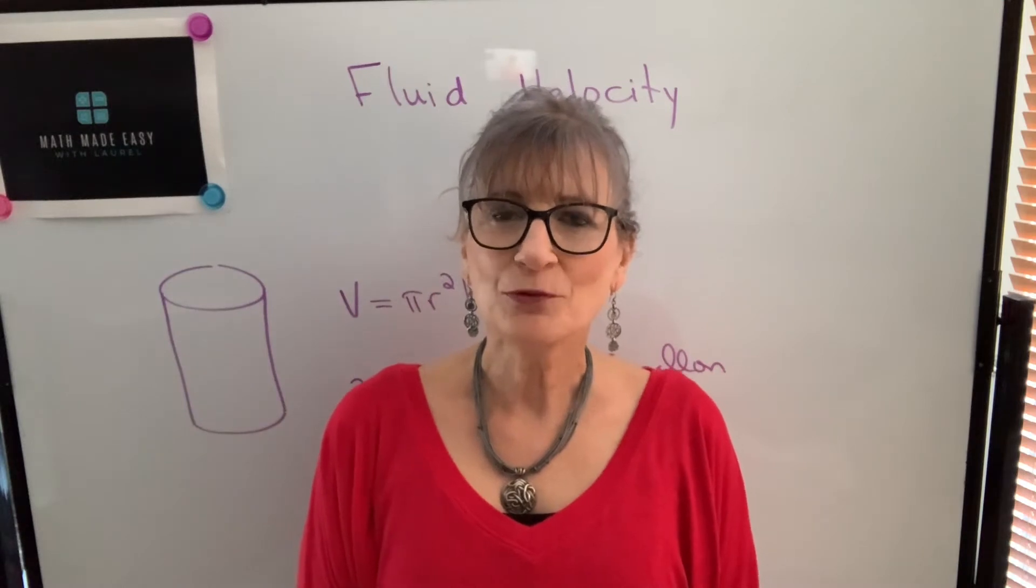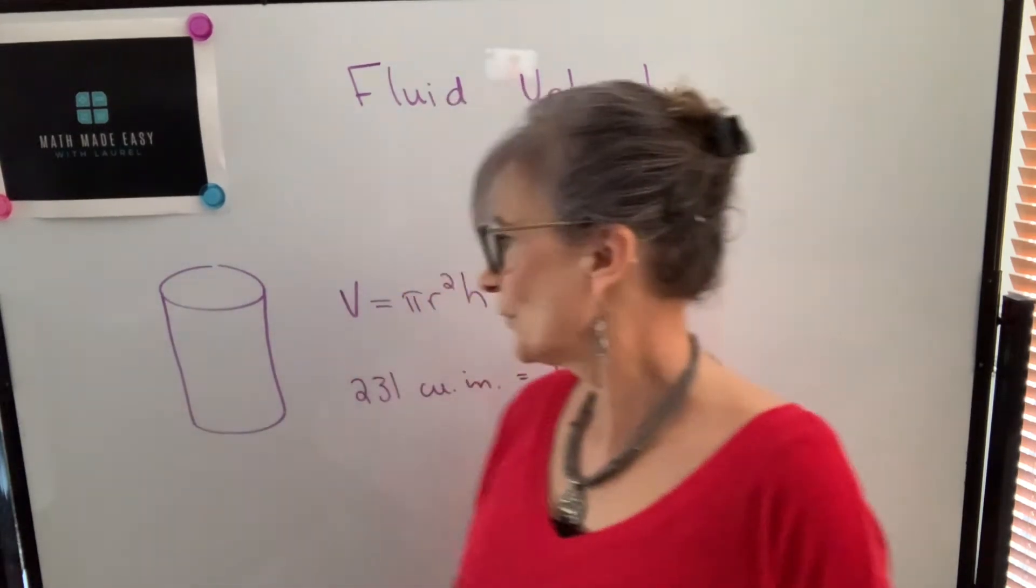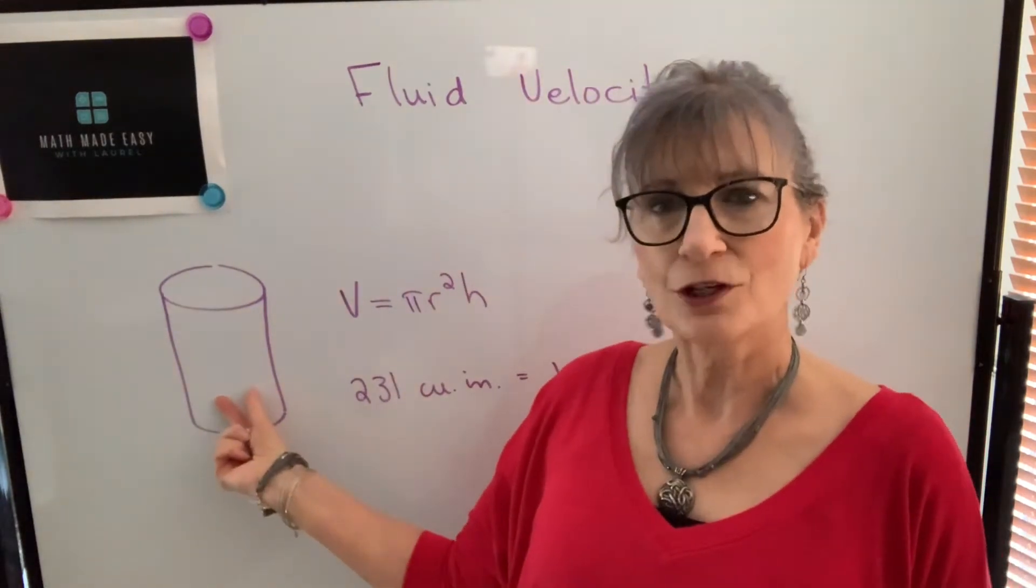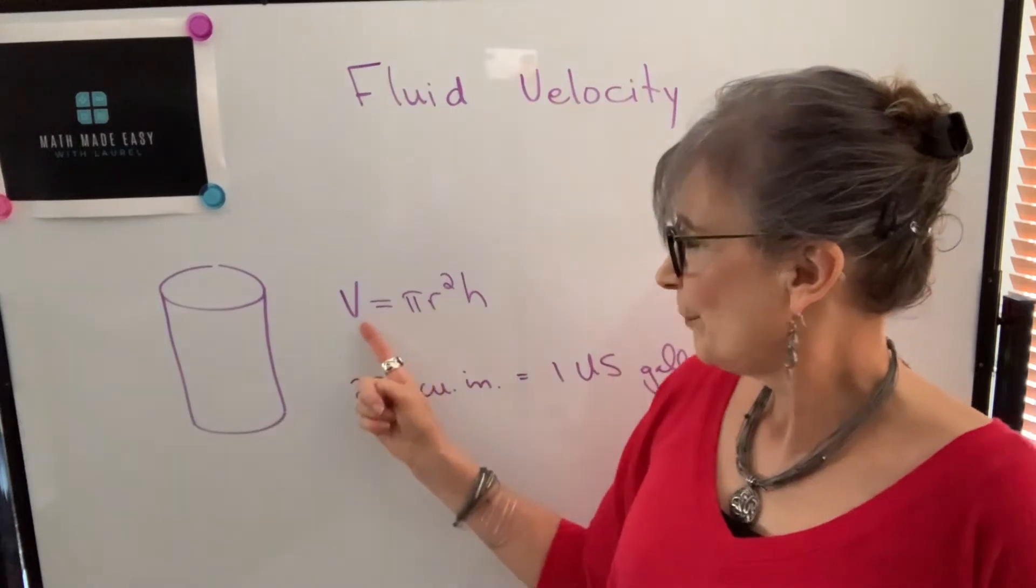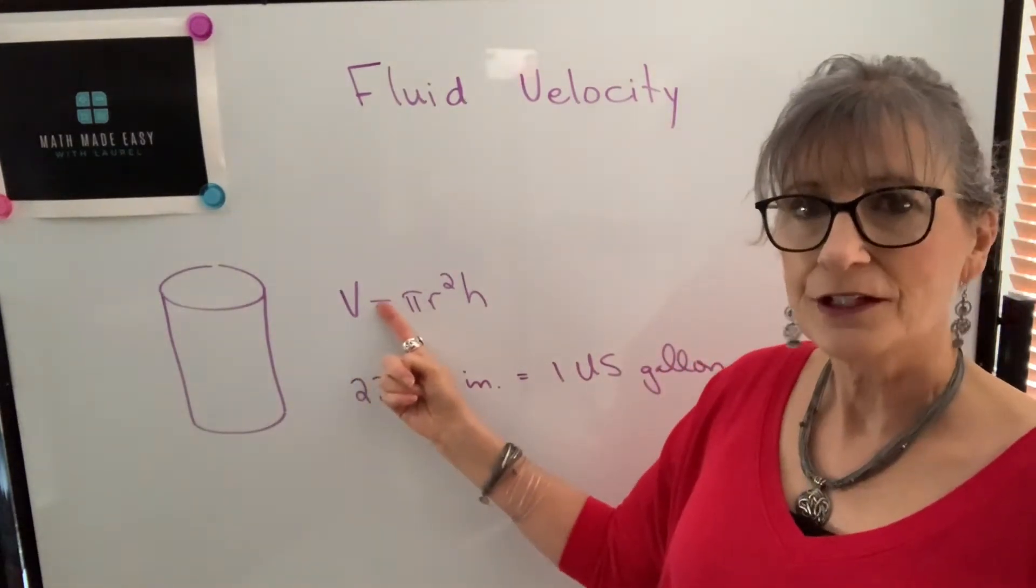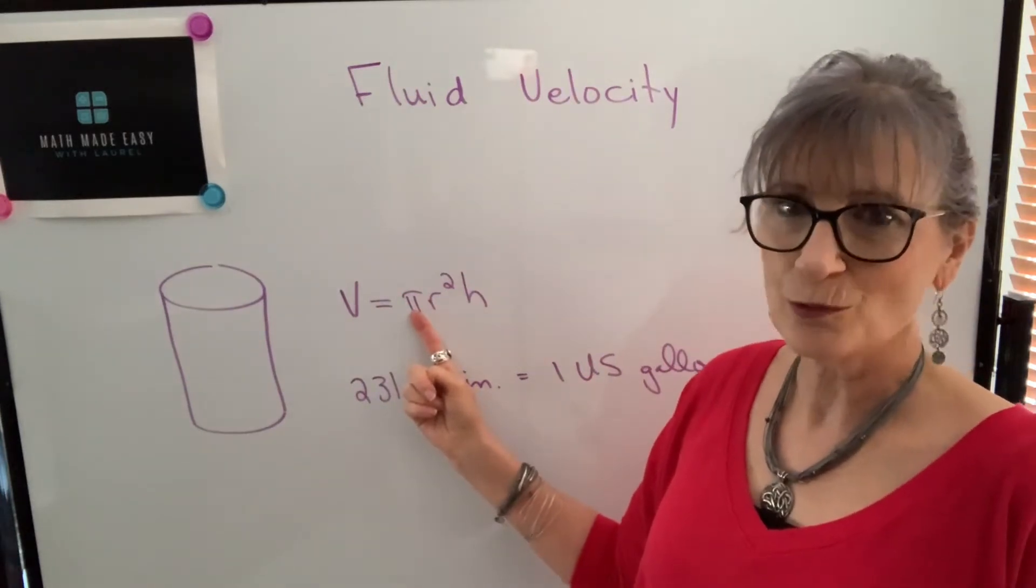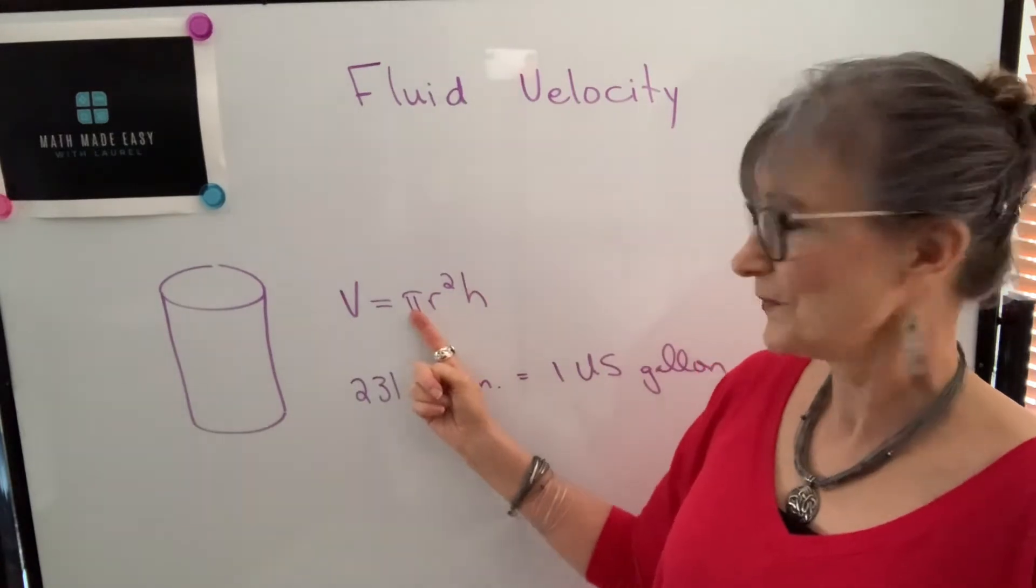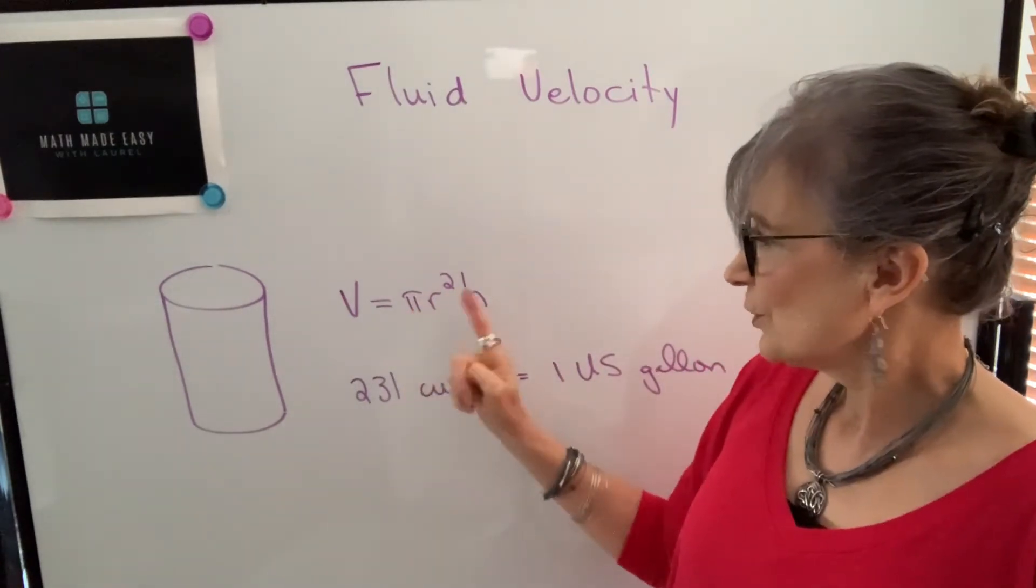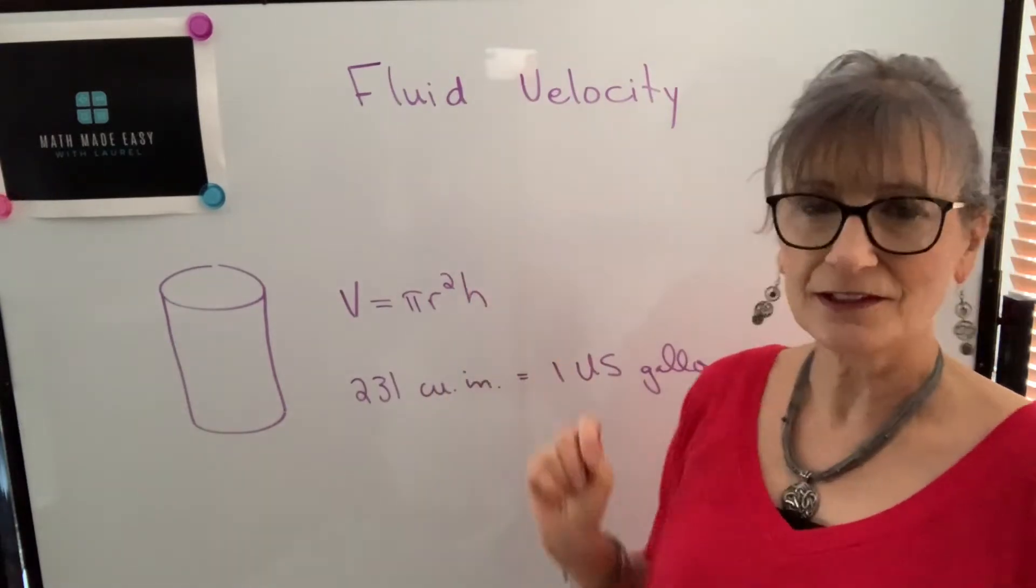When we're talking about fluid velocity we need two important concepts. One of them is volume of a cylinder, and I've talked about volume of cylinders in a previous video. But just as a review, the volume can be calculated by taking pi, which is approximately 3.14 or 3.1416 or you may use the pi function on your calculator. You take that special number and you multiply by the radius squared and then you multiply by the height of the cylinder.